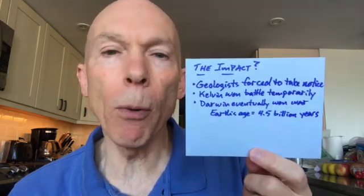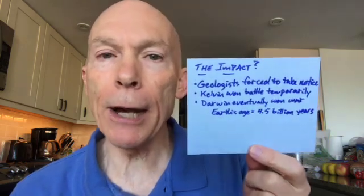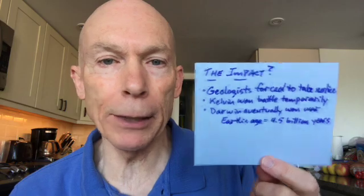So what was the final impact of all of this? William Thompson forced the geologists to take notice of the use of physics to calculate such things as the age of the Earth — it had a tremendous effect on the geologists of the day. Kelvin won the battle temporarily in the mid-1800s; his calculations stood firm. But Darwin eventually won the war. The age of the Earth is more like 4.5 billion years, much greater than 100 million years. Some of the errors in Kelvin's calculation concerned the fact that he assumed there was no heat source generating heat in the center of the Earth. Whereas later, people discovered the concept of radioactivity and radioactive decay, which could generate heat from an internal source — and that's what was happening in the Earth. This was a very positive impact as it raised the discussion to a much higher level.